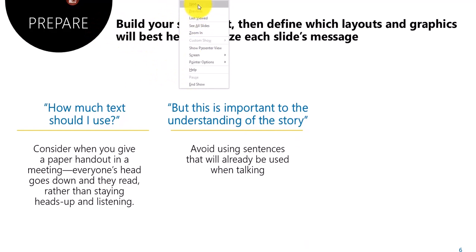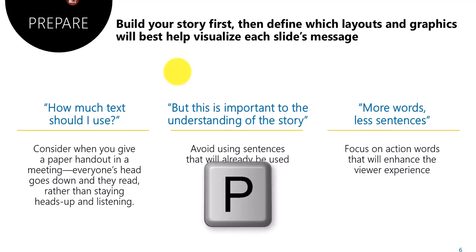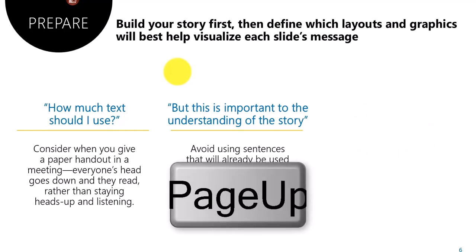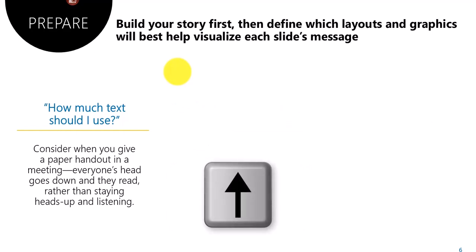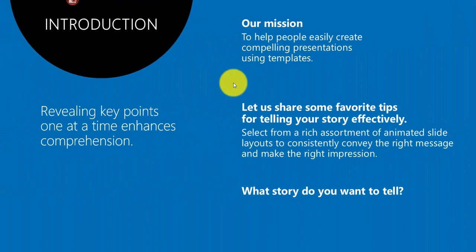Next I'll show you four ways to go to a previous slide — though sometimes it goes to a previous animation rather than a previous slide. You can press P for Previous on your keyboard, press the Page Up key, press the Up arrow, or right-click and select Previous.